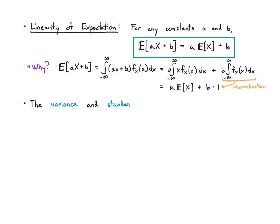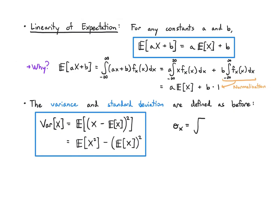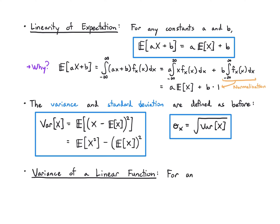We define variance and standard deviation in the same way. Variance is the expectation of (X minus its mean) squared — an average of how X varies around its mean. Equivalently, Var(X) = E[X²] − (E[X])². Standard deviation is the square root of variance to put it back into the original units. For a linear function, Var(aX + b) = a²·Var(X): the shift b doesn't matter, and a gets squared because variance squares everything inside.